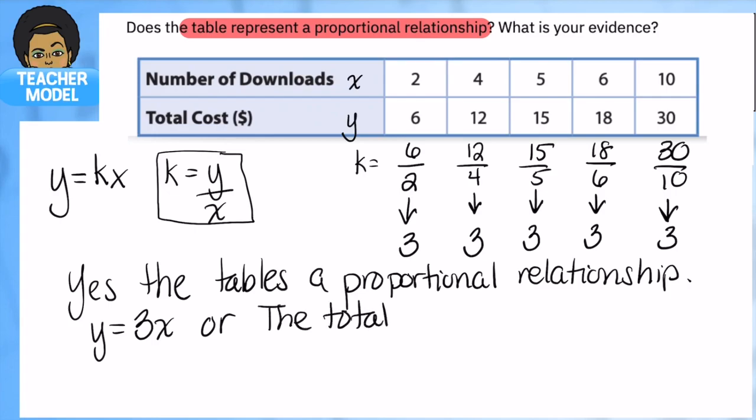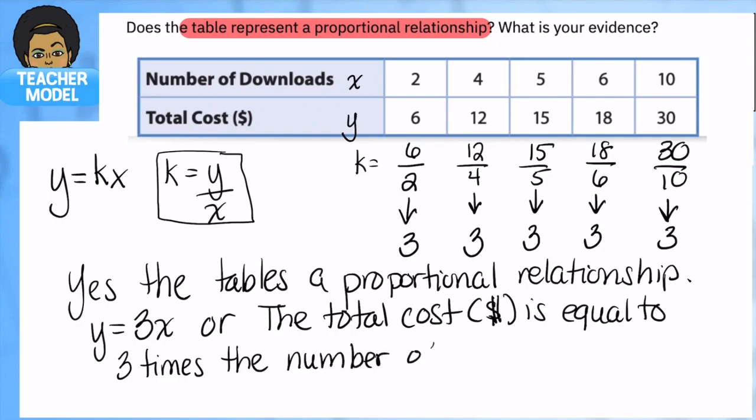Let's actually write this out. The total cost in dollars is equal to 3 times the number of downloads. I want to make sure this really makes sense. When we say it's equal to 3 times the number of downloads, that 3x means no matter how many downloads I have, I just do three times the downloads to find out the cost. Why? Because what does that tell you about each download? What would one download be?